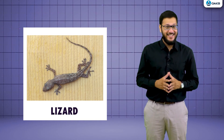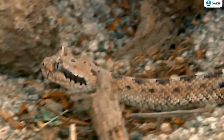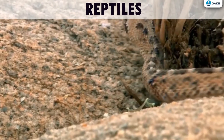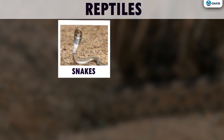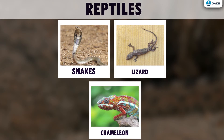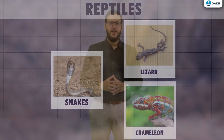Look at those animals — they are called reptiles. Can you name some of them? They are snakes, lizard, and chameleon. They crawl through their limbs, except for the snake, which has no limbs. Oh, an insect just bit me!